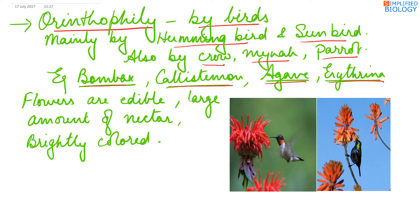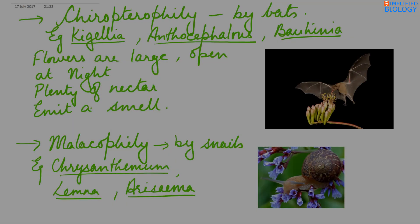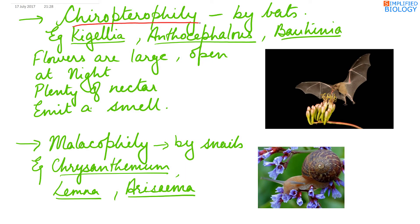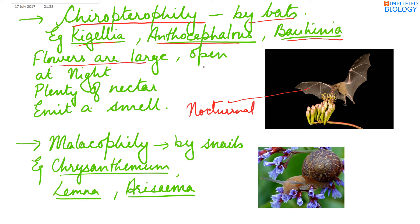In these plants, the flowers are large, produce a large amount of nectar, and are brightly colored. Next, chiropterophily — pollination by bats. Seen in Kigelia, Anthocephalus, and Bauhinia. As bats are nocturnal, they carry out pollination at night. The flowers are large, open at night, white in color, and have plenty of nectar. They emit a smell that attracts the bats.